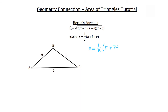...plus six. So X is equal to one-half of eighteen — that's five plus seven plus six — and half of eighteen is nine. So X is equal to nine. Now we want to plug that into Heron's formula.